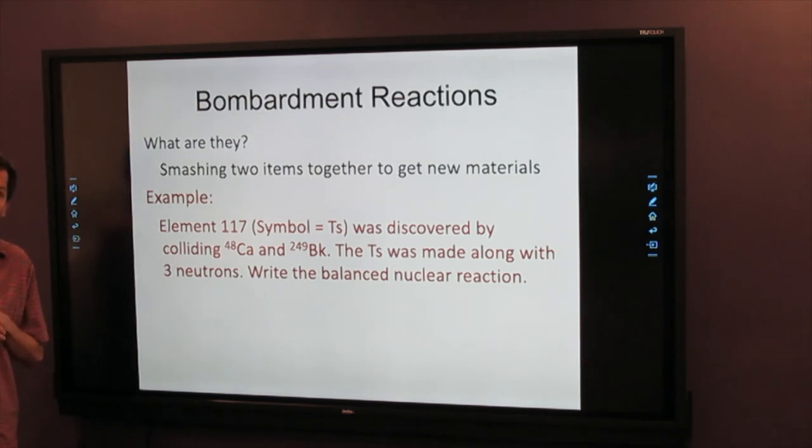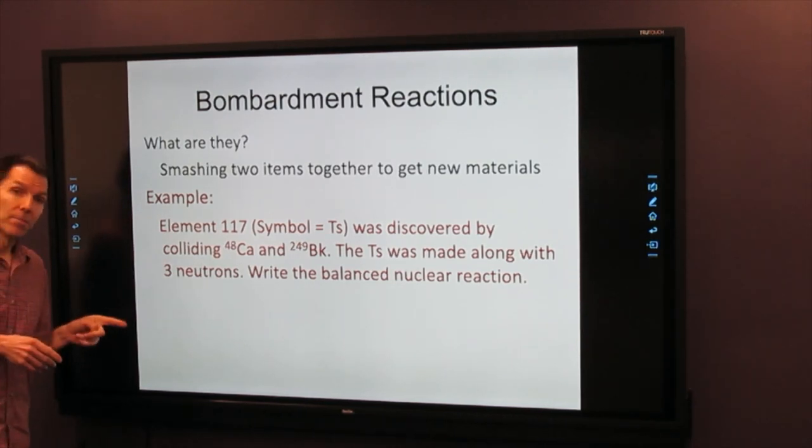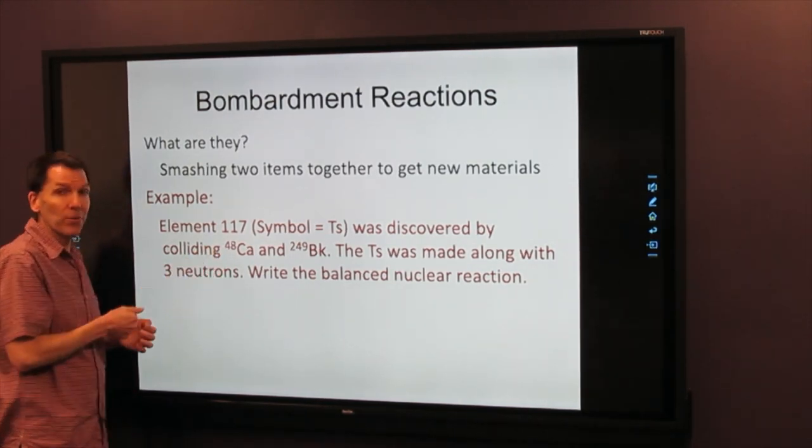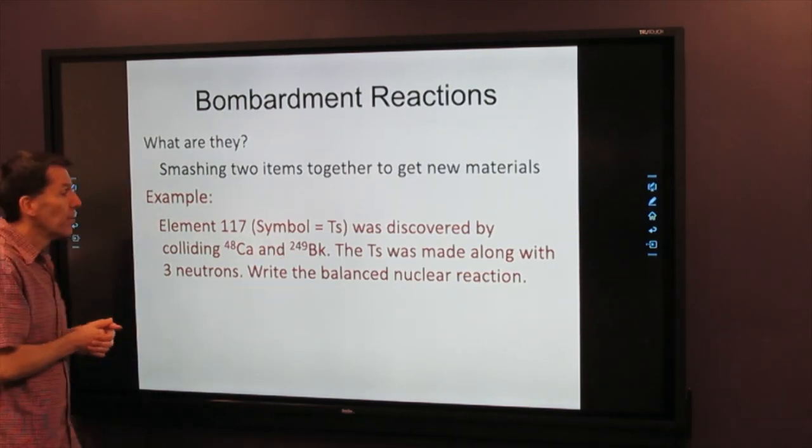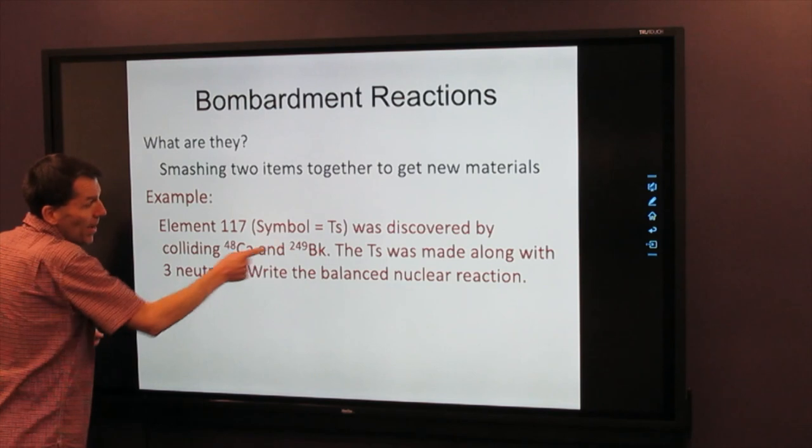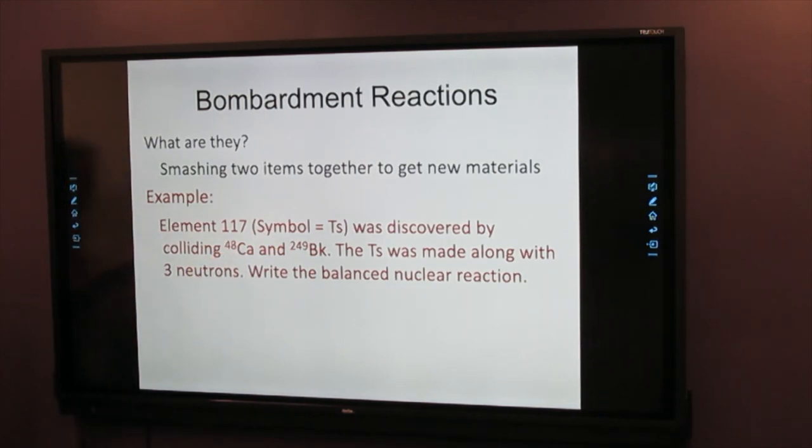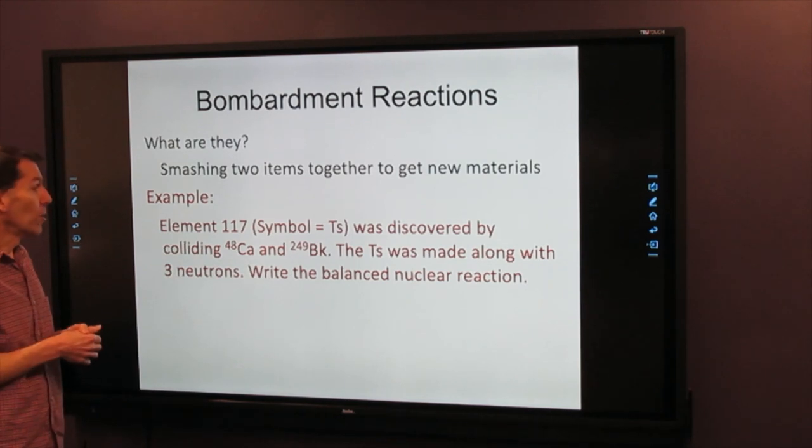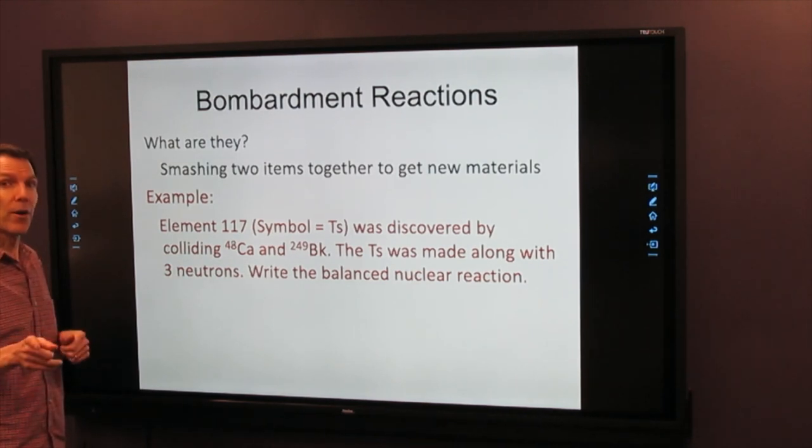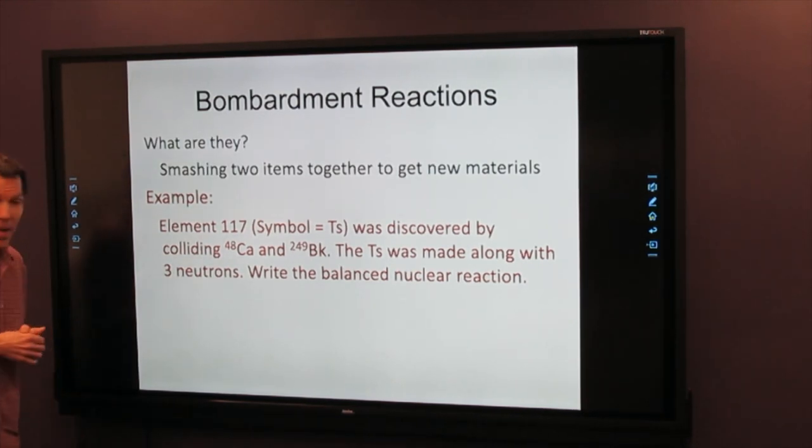Here's a practice problem for you. Element 117, the symbol is TS, was discovered by colliding a calcium isotope with a mass of 48 and 249 berkelium. And those two got smashed together. The TS was made along with three neutrons. Try to write the balanced nuclear reaction.